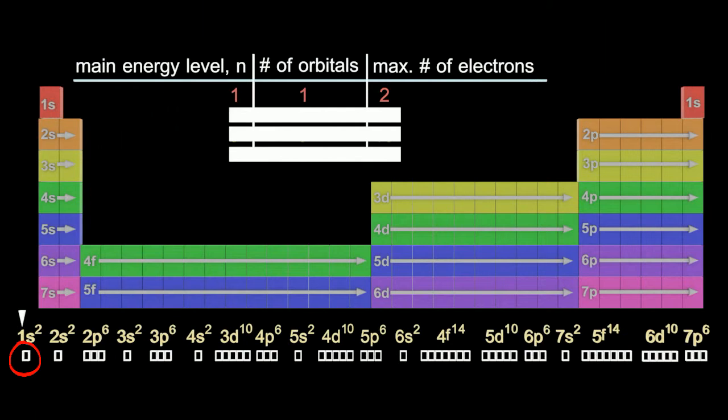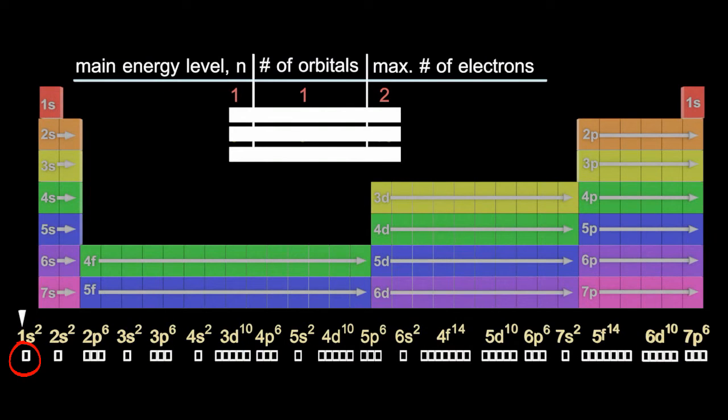So first main energy level, well that's just got one little box there, one little orbital, 1s2. And each box, each orbital can hold two electrons. So the maximum of electrons in the first main energy level is two.